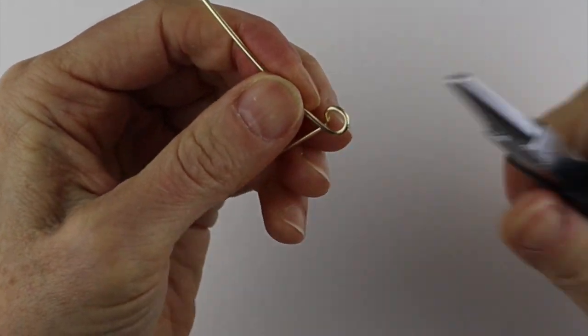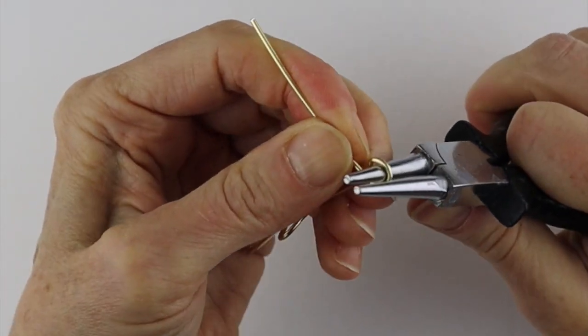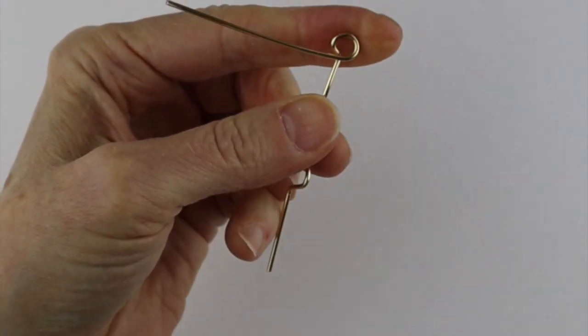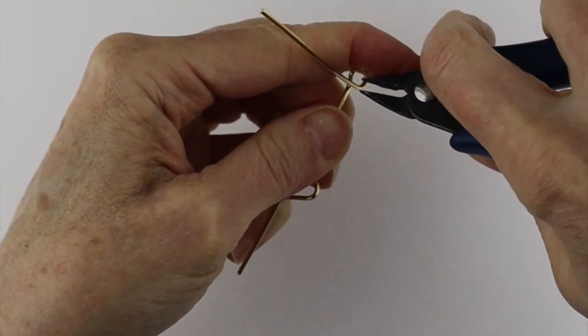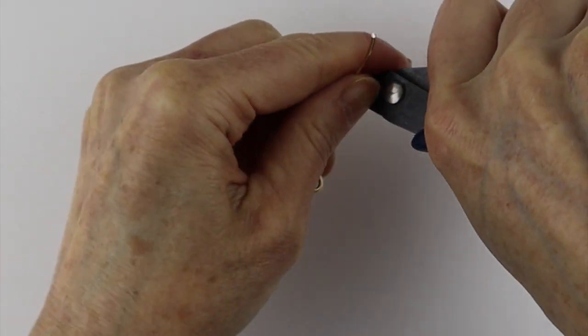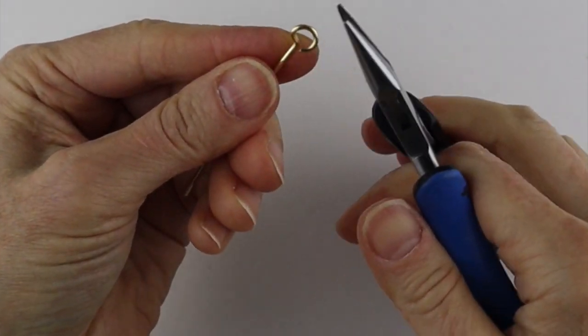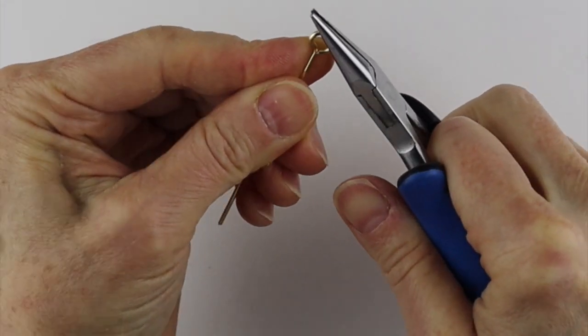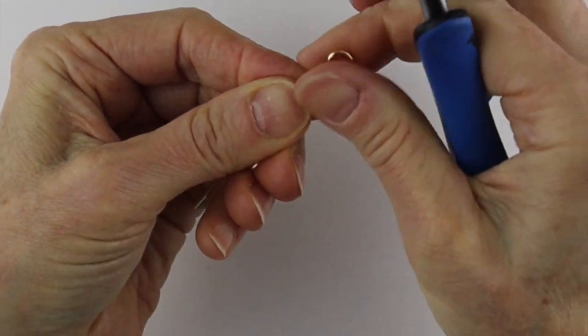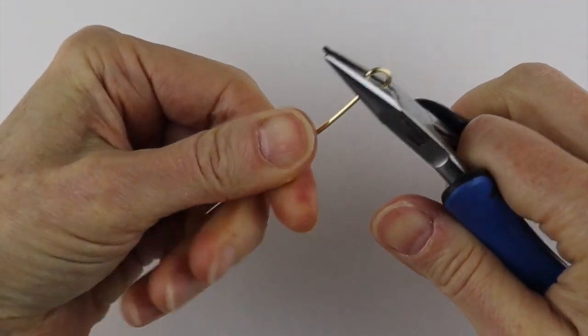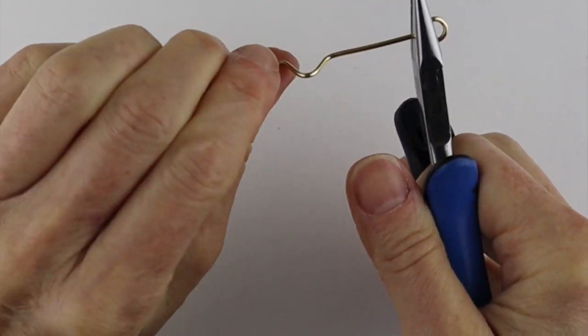We're just going to cut this flush in there and push that in so there's no sharp edges dangling. Just check it with your thumb and finger and make sure this is straight across.